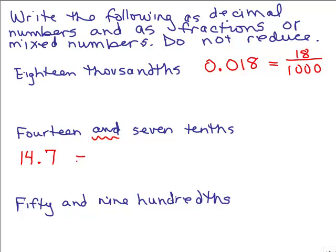So that's how I write that as a decimal number. Now how can I write that as a mixed number or a fraction? It's a mixed number, right? It's a whole number and a fractional part. So I could write that as 14 and 7 tenths.